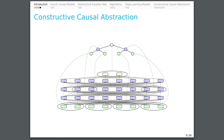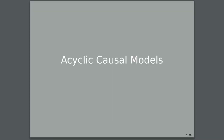In this video, we develop the concepts of acyclic causal models and constructive causal abstraction, and show how they can be used to analyze artificial neural networks.